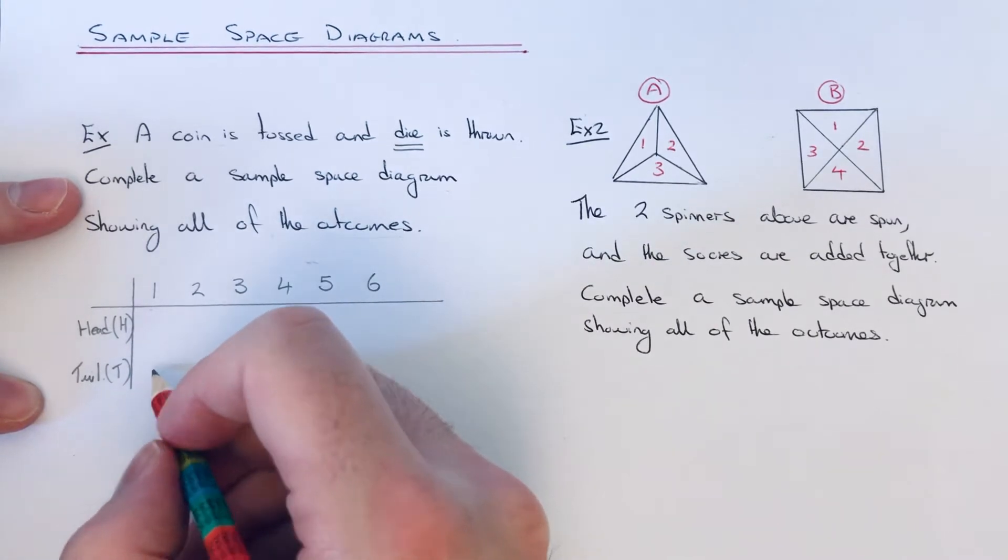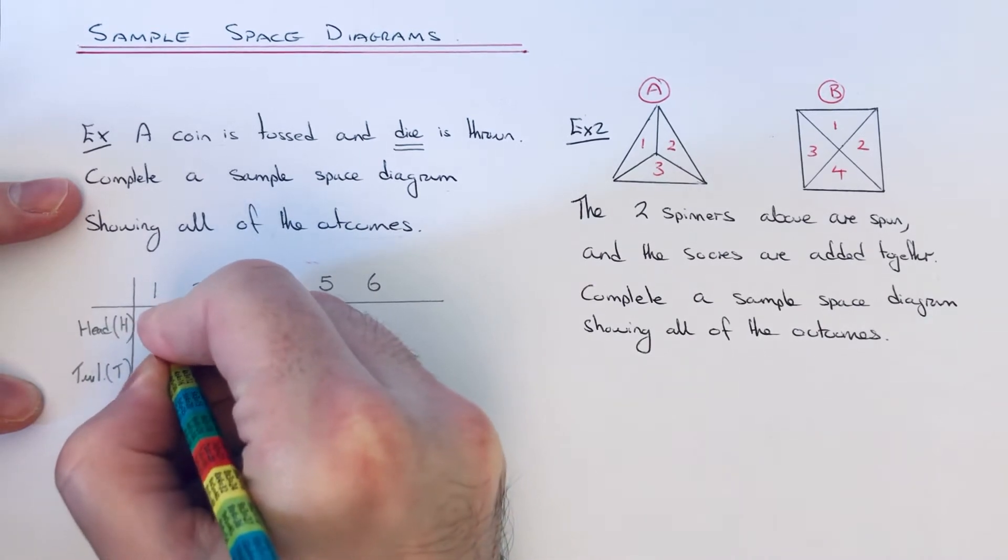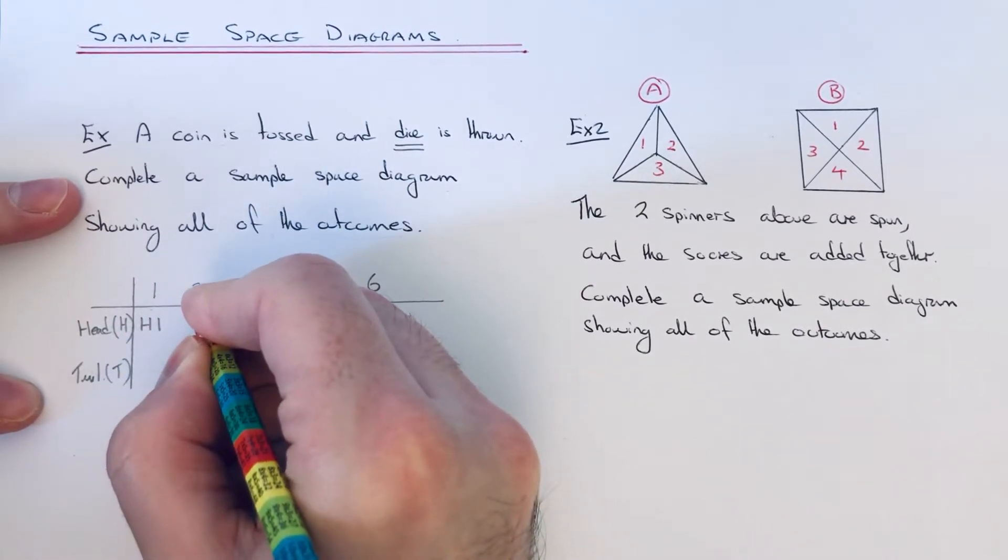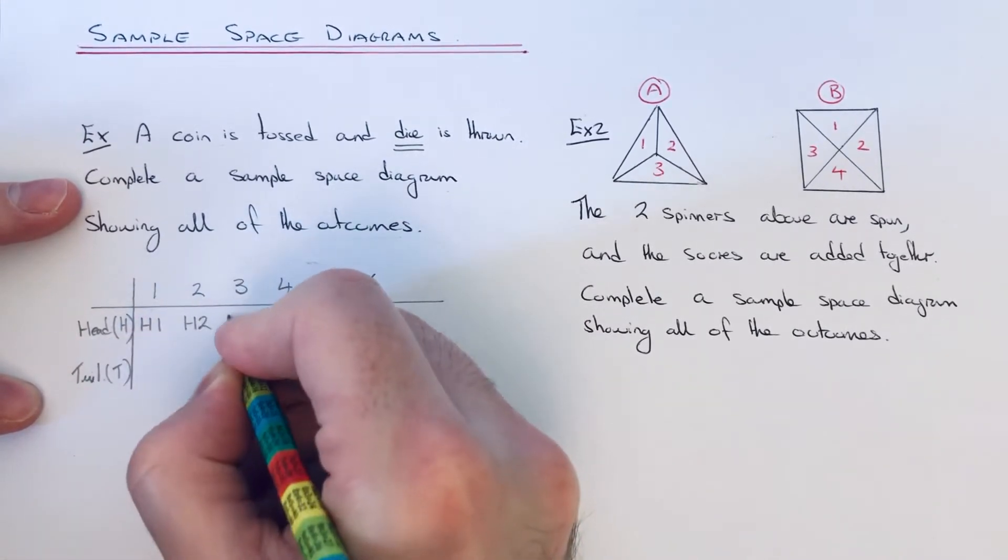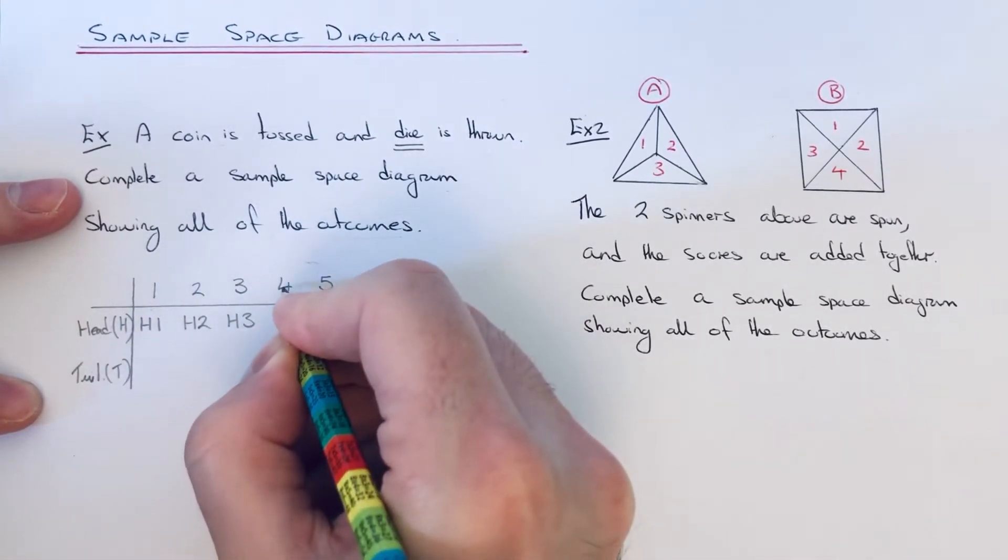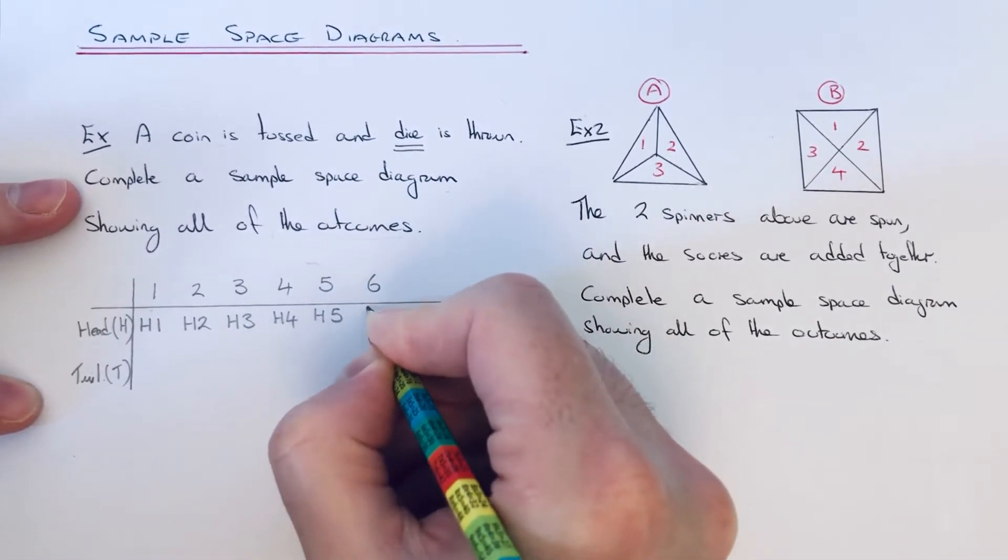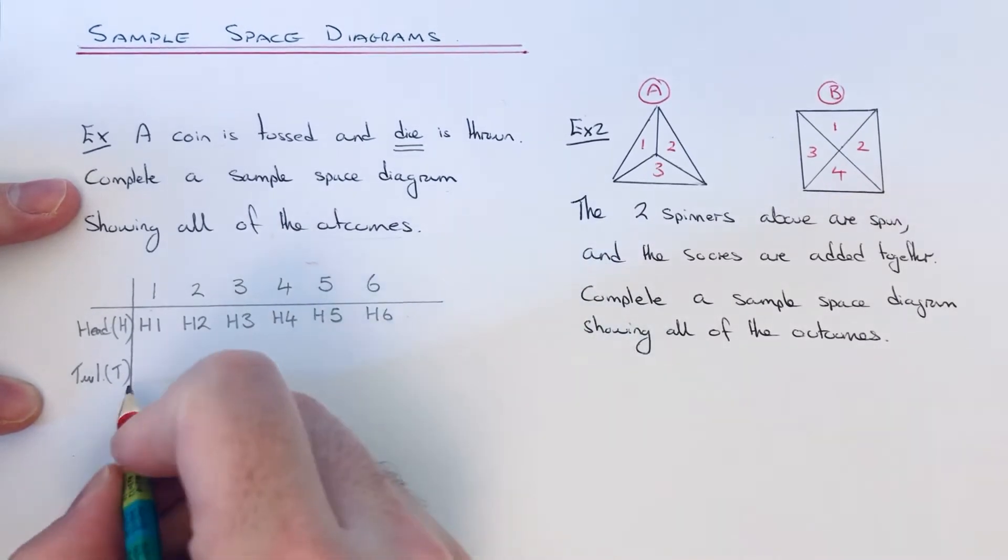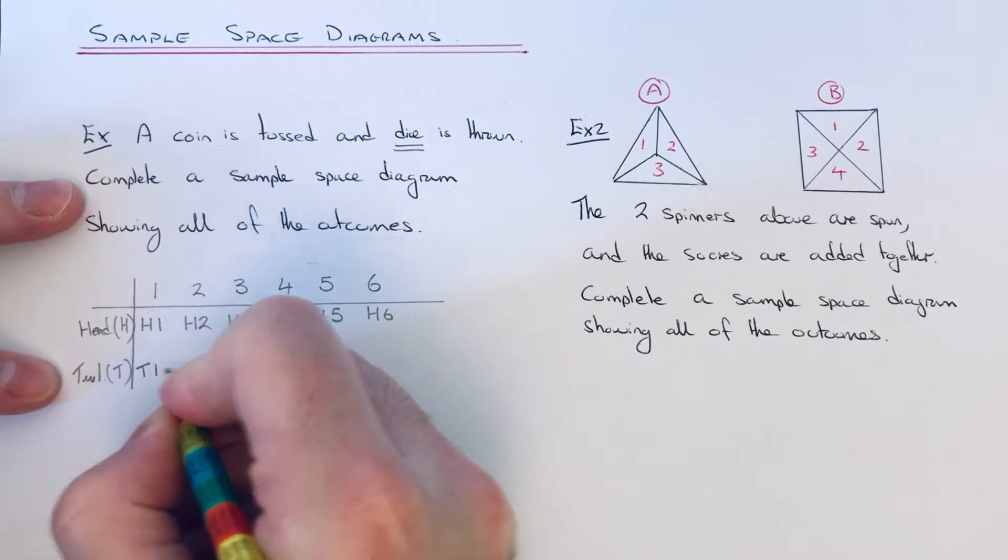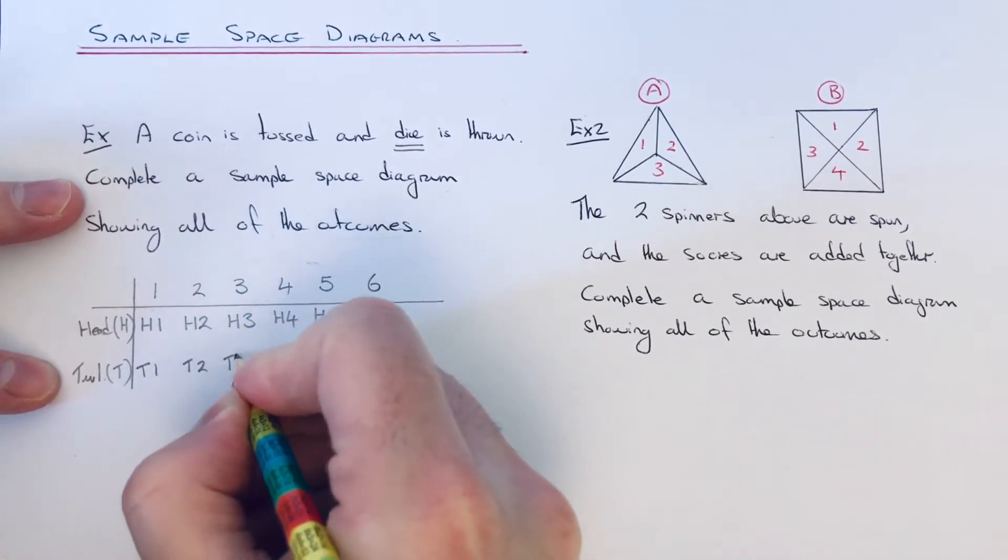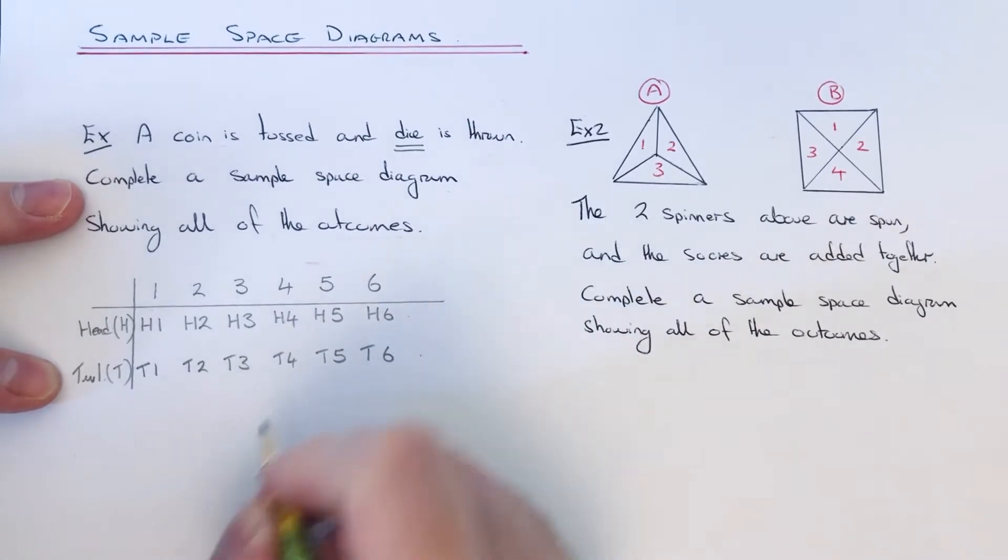So our first one will be head and a 1, so H1. Next outcome would be H2, then H3, head and a 4, head and a 5, and head and a 6. Then we do the same again for the tails: T1, T2, T3, T4, T5, T6.